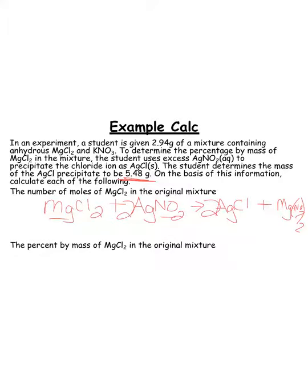We know that we had isolated 5.48 grams of the AgCl. So I had 5.48 grams of my AgCl, and I want to figure out how many moles of MgCl2 I had. So to go from AgCl to MgCl2, I've got to go from grams to moles, but I've got to go through my balanced equation.